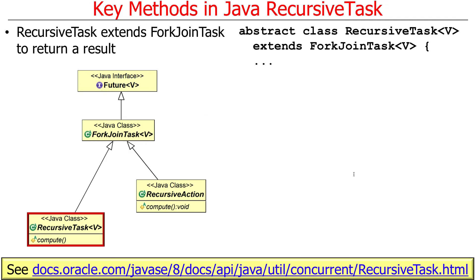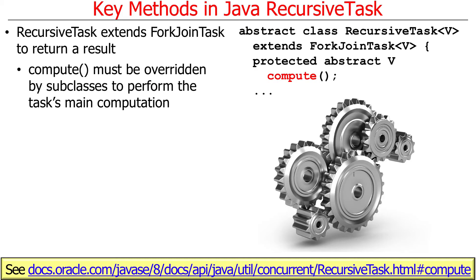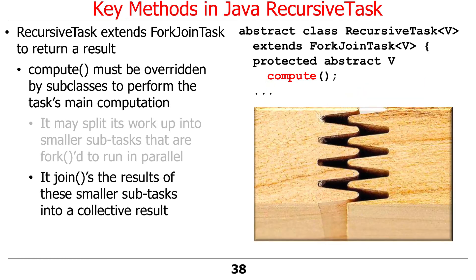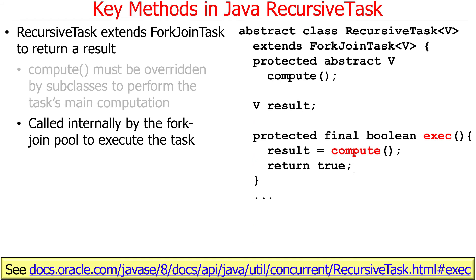If you have values coming back, you subclass RecursiveTask, which also extends ForkJoinTask and has a compute method that returns a value of type V. You must override compute to perform the task's computations, and it can return a value. It may also split work into subtasks recursively, with many things running in parallel, and joins the results of smaller subtasks into a collective result returned from the function. Internally, it's driven by an exec call which calls compute, takes a result, and returns true.